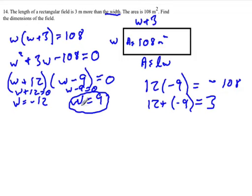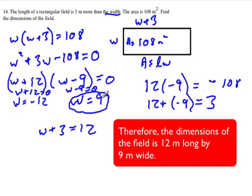So if W is equal to 9, then the length, which is W plus 3, is equal to 12 because 9 plus 3 is 12. And when we check it out, 9 times 12 is 108. And so that fits. So therefore, the length of the field is 12 meters and the width is 9 meters.